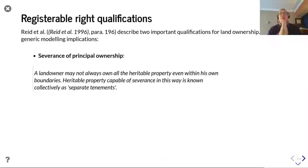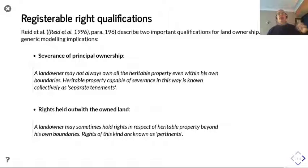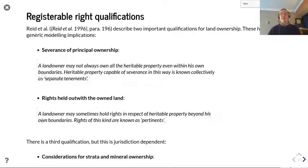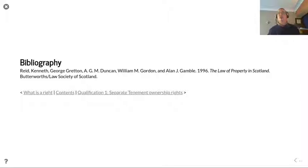What about qualifications around registrable rights? Professor Ken Reid described two important qualifications for land ownership that have generic modelling implications. The first is severance of principal ownership: a landowner may not always own all of a heritable property, even within his own boundaries. Heritable property capable of severance in this way is known collectively as separate tenements. The second is rights held out with the owner's own land — a landowner may sometimes hold rights in respect of heritable property beyond his own boundaries, and rights of this kind are known as pertinence. There is a third qualification, which tends to be jurisdiction dependent: considerations for strata and mineral ownership — special and separate rules that regulate the position of the owner of flatted properties and minerals. We will look at each of those in turn.